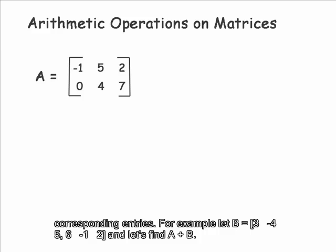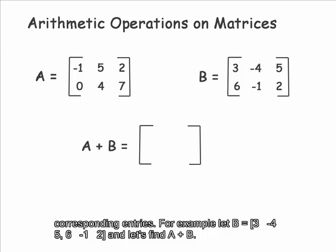For example, let B equal in row 1: 3, negative 4, 5, and in row 2: 6, negative 1, 2, and let's find A plus B.